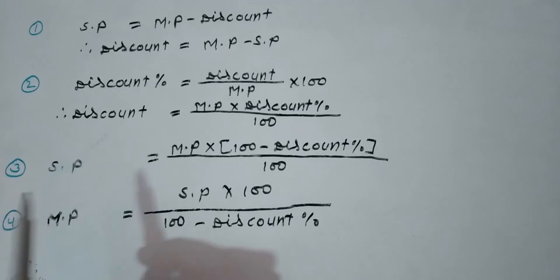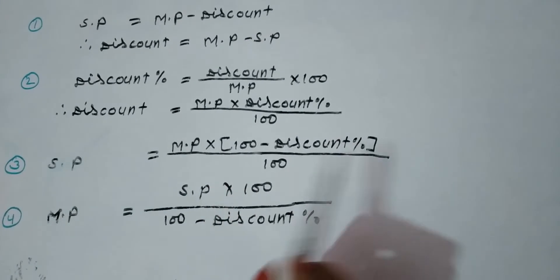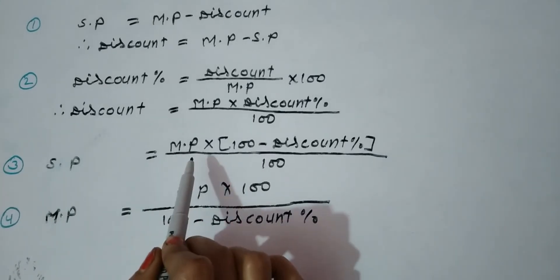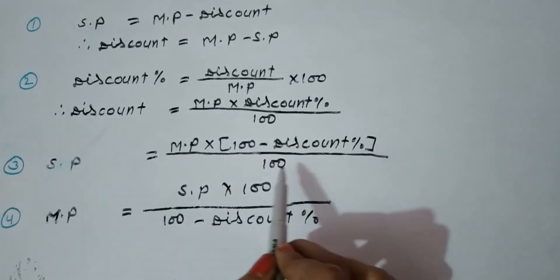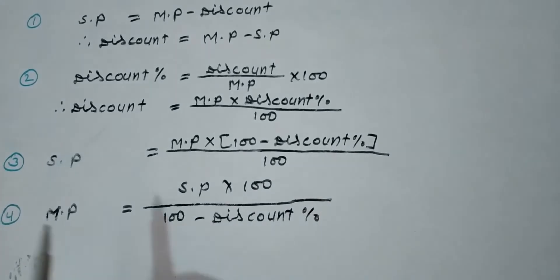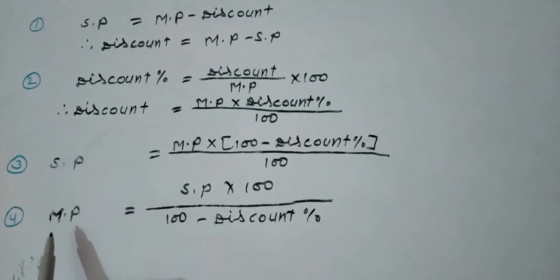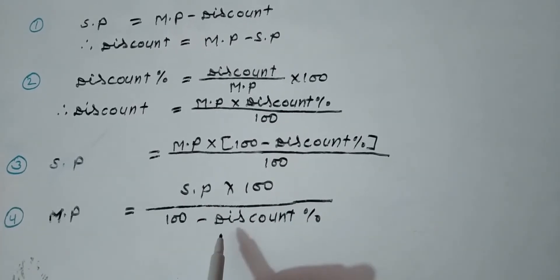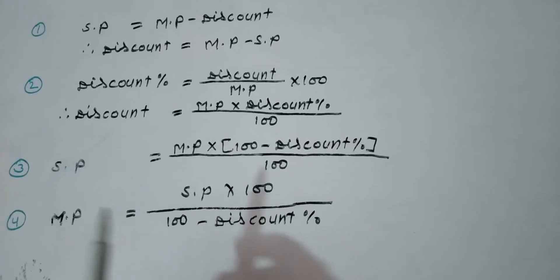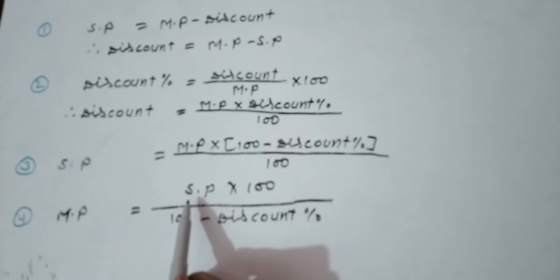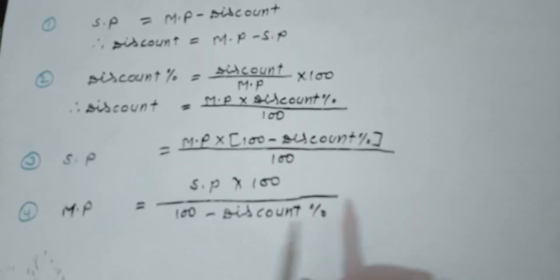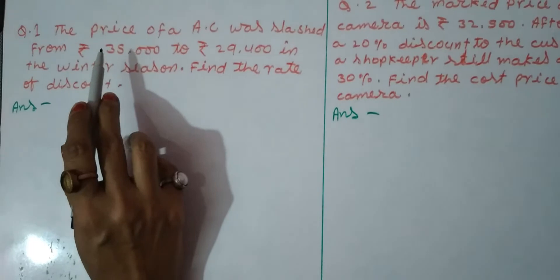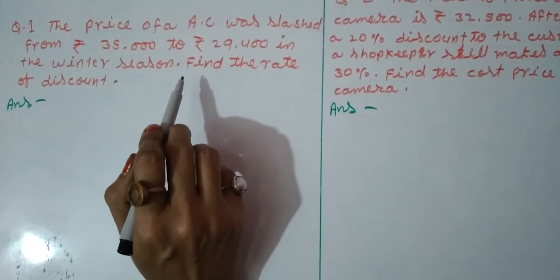The next formula is for SP — selling price. SP can be asked when market price and discount percentage are given. The formula is: SP = MP × (100 − Discount%) ÷ 100. And the next formula is for MP: MP = SP × 100 ÷ (100 − Discount%). So when we need to find market price, selling price and discount percent will already be given in the question.